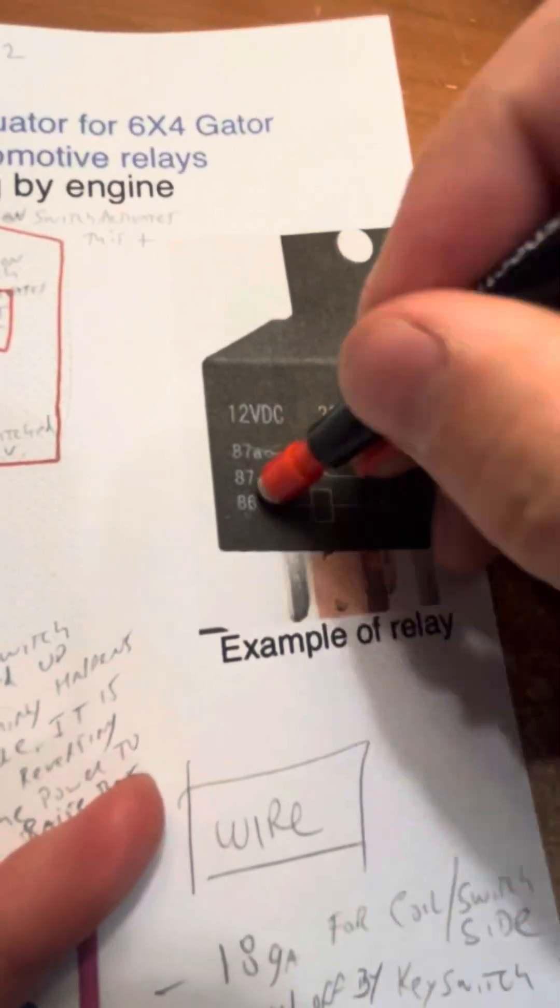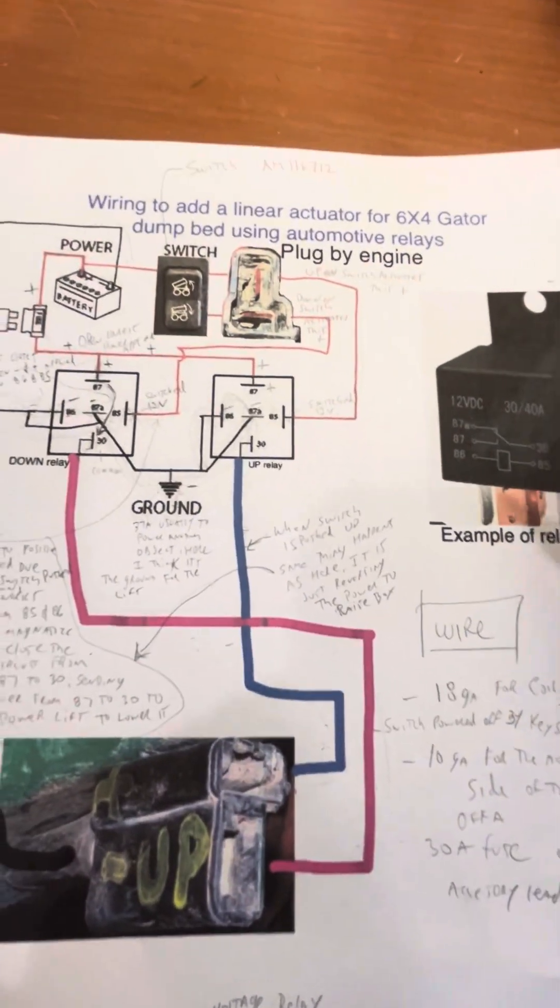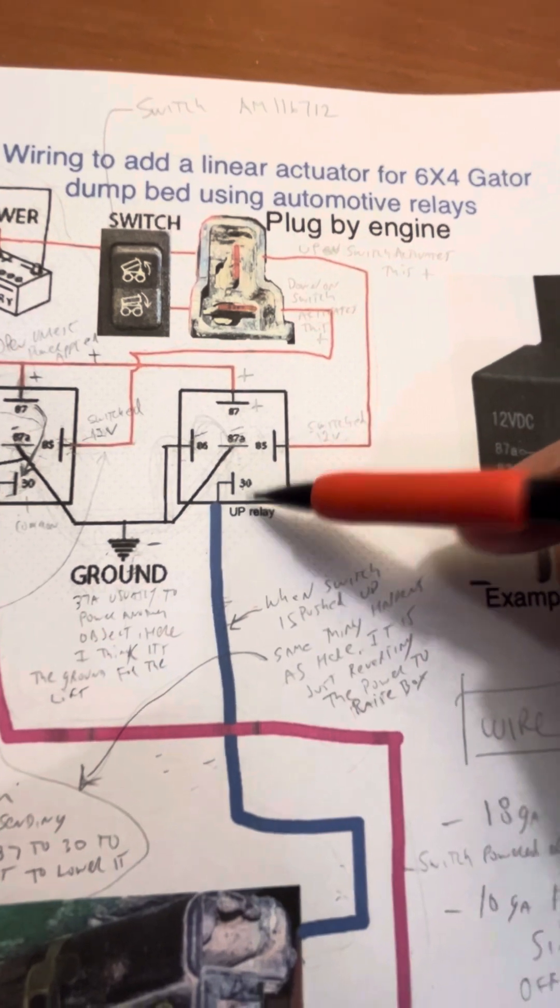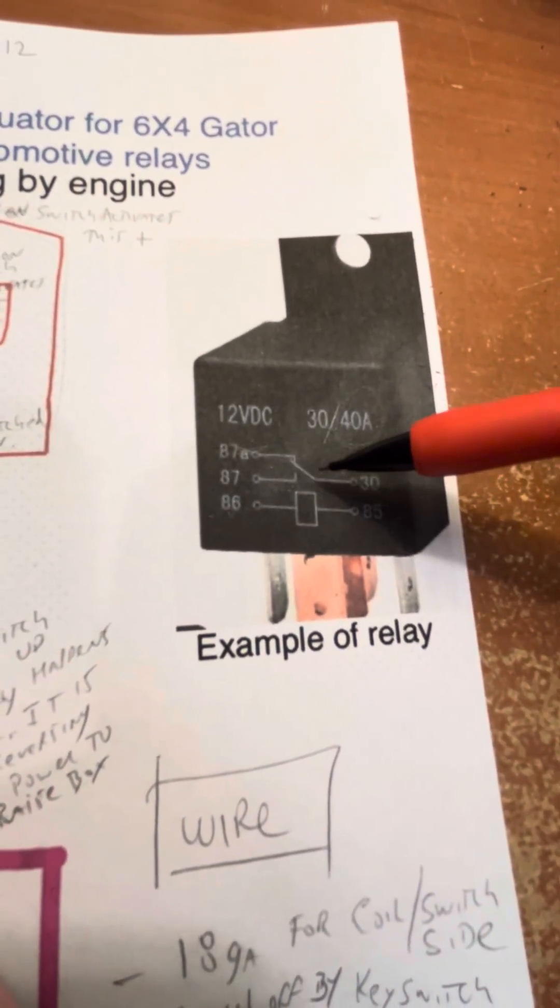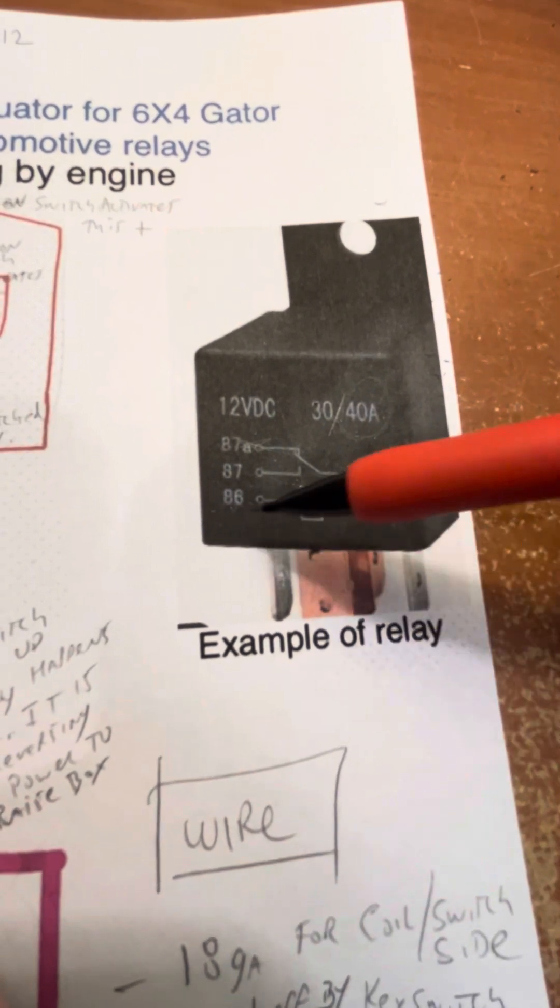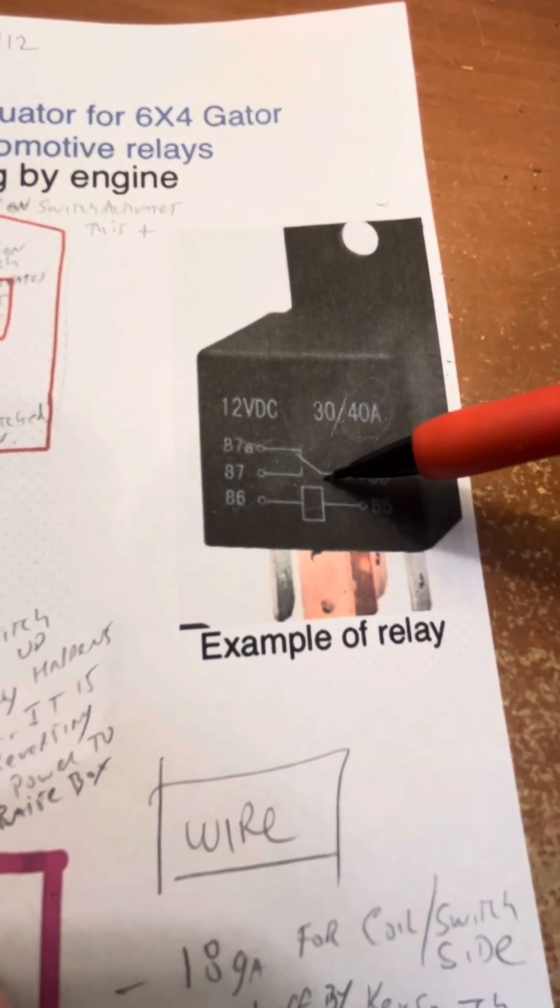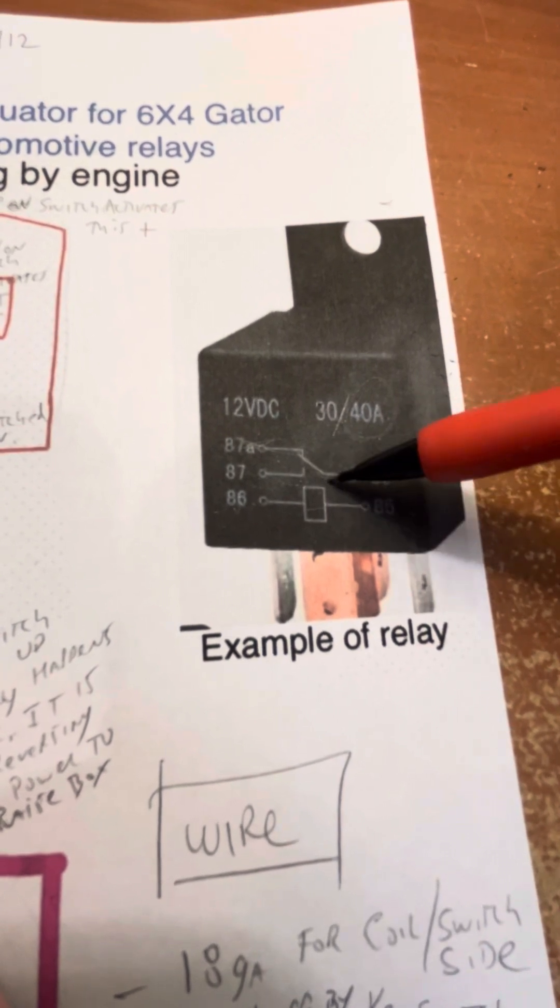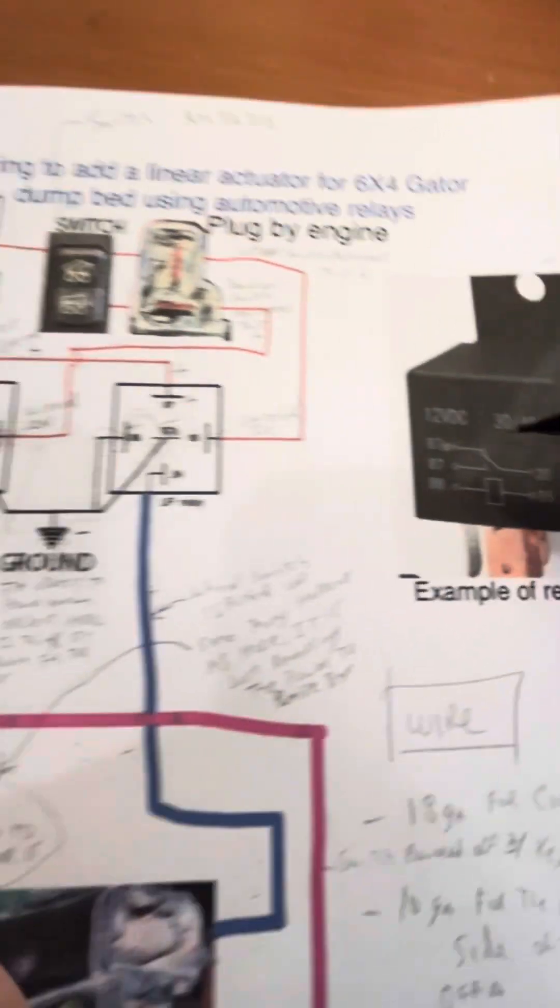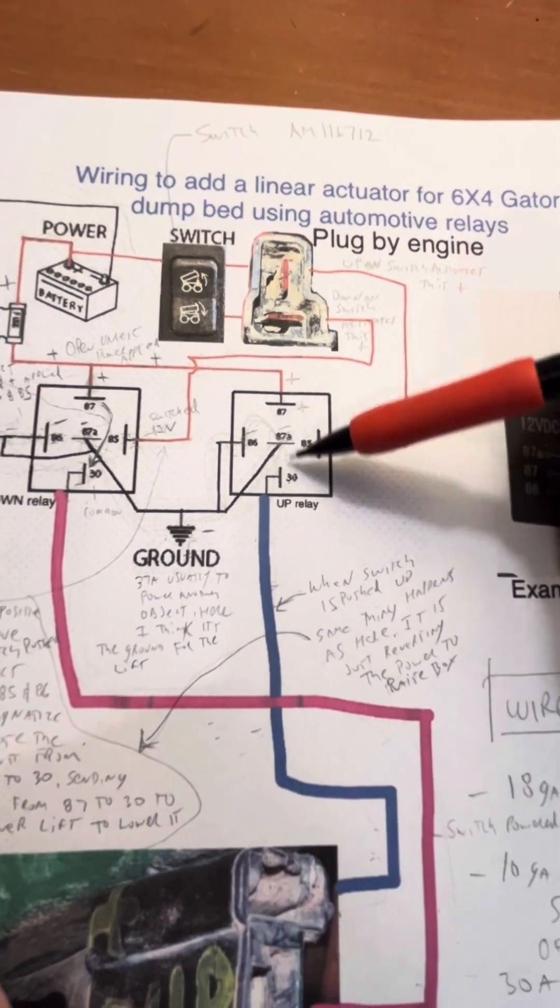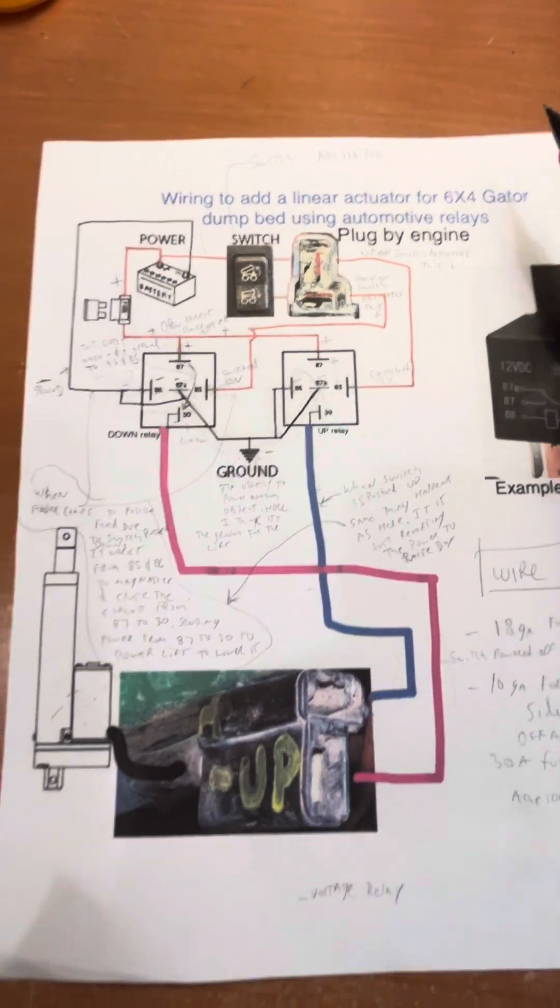Wish I wouldn't have wrote on this because it makes it hard to see. So as you can see, that's the 87 and the 30. So you'll see when the 85 and 86 connect, it creates the magnet, which takes the 30 from the 87A and moves it to the 87. So 30 to 87. See, 30 to 87. So that's the theory.